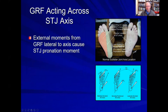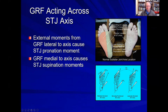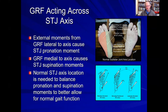When ground reaction force acts on the plantar foot with a normal axis location, any ground reaction force lateral to the axis causes a subtalar joint pronation moment, and any force medial to the axis causes a subtalar joint supination moment. In a foot that functions most normally during gait, approximately equal halves of the foot lie on the supination side and the pronation side. When the supination moment from medial ground reaction force and the pronation moment from lateral ground reaction force are balanced, normal gait function is more likely to occur.